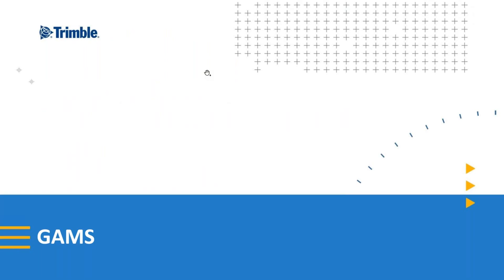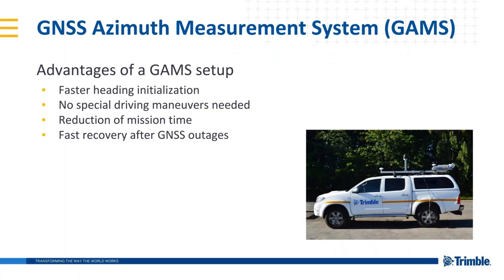Now let's go to the first actual topic: GAMS, which stands for GNSS Azimuth Measurement System. On the MX2 system, for example, there is a primary antenna on top of the pod and a second GNSS antenna in the front — this is the GAMS antenna. There are multiple advantages to using GAMS. First, we can get faster heading initialization in the field, meaning we don't always need special driving maneuvers like a figure-eight in a parking lot, which reduces the time needed to complete our mission.